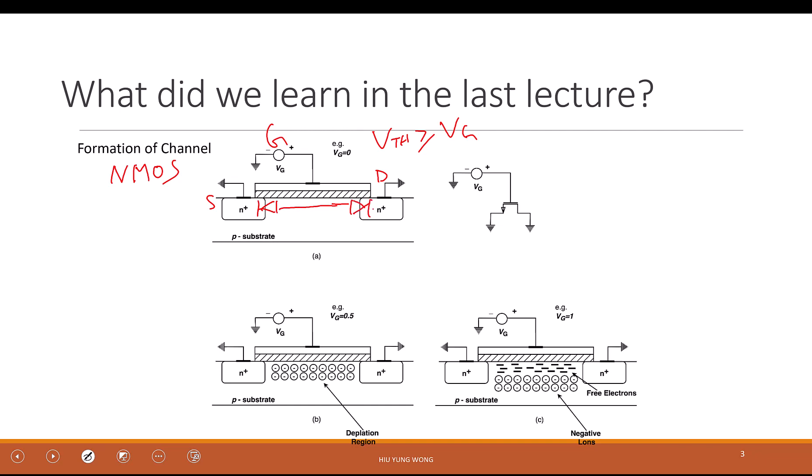As you can see from this figure, N-P-N. So that's not going to conduct any current. So this is the so-called off state. It doesn't conduct anything. This is a resistor with a very large resistance.